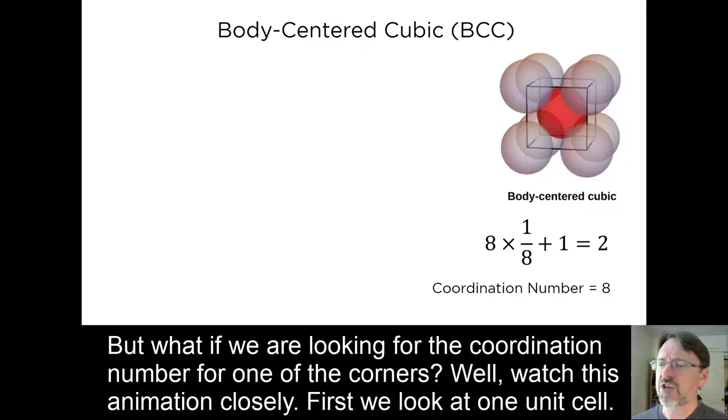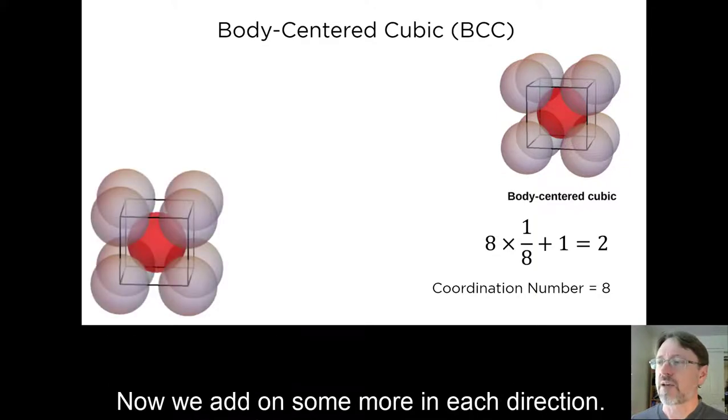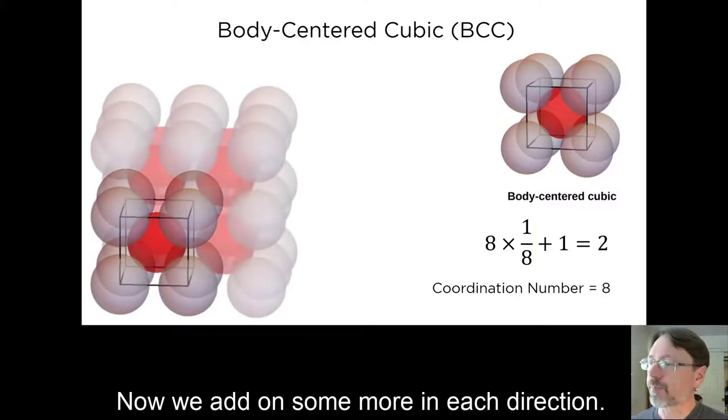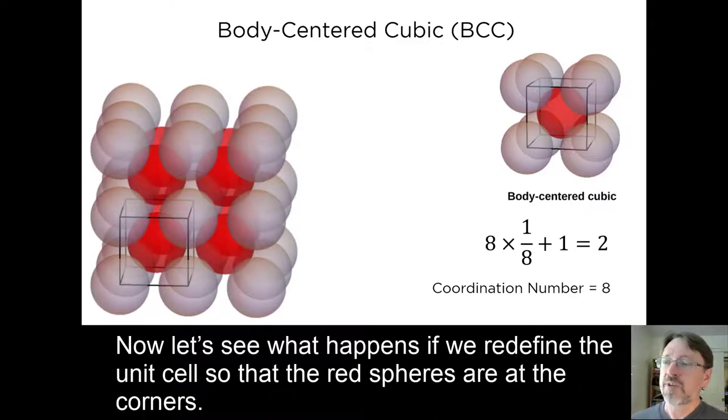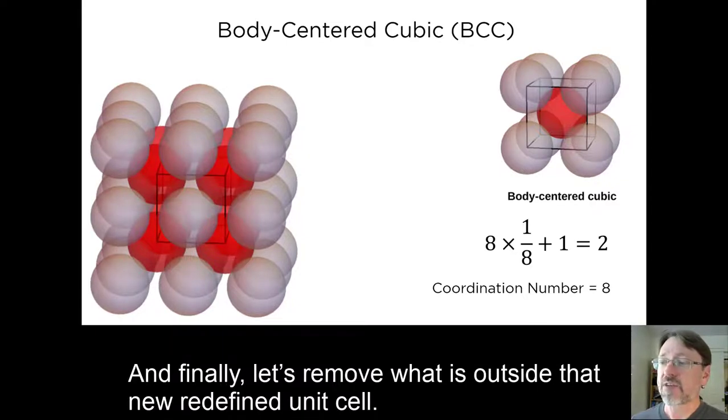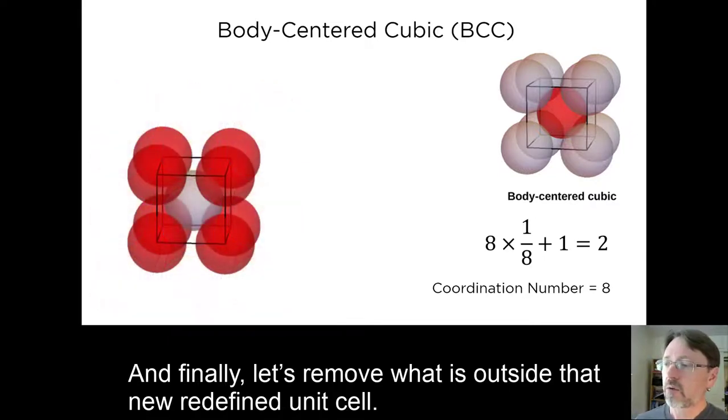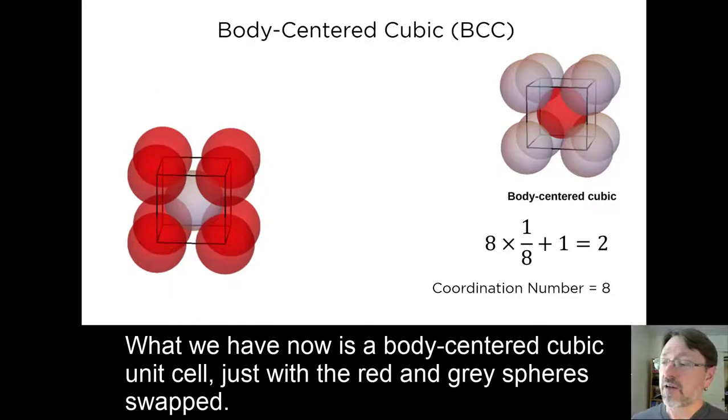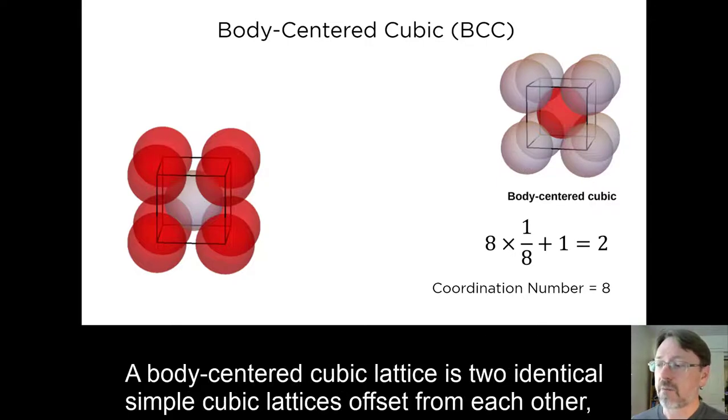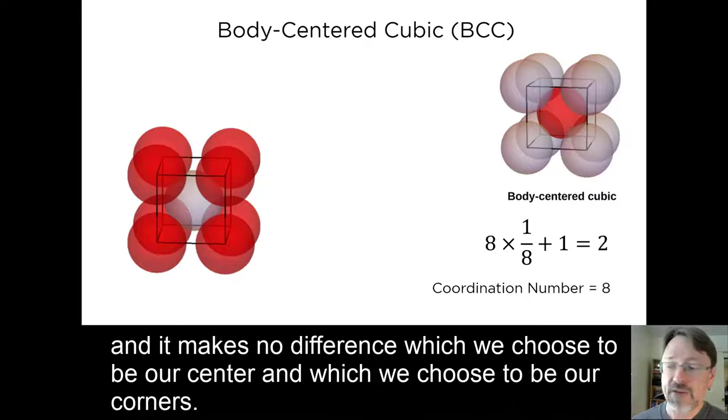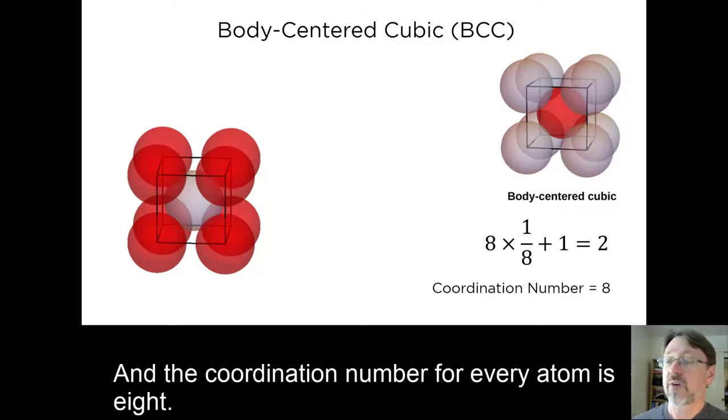But what if we are looking for the coordination number for one of the corners? Well, watch this animation closely. First, we look at one unit cell. Now we add on some more in each direction. Now let's see what happens if we redefine the unit cell so that the red spheres are at the corners. And finally, let's remove what's outside the newly redefined unit cell. What we have now is a body-centered cubic cell, just with the red and gray spheres swapped. A body-centered cubic lattice is just two identical simple cubic lattices offset from each other, and it makes no difference which we choose to be our center and which we choose to be our corners. And the coordination number of every atom is 8.